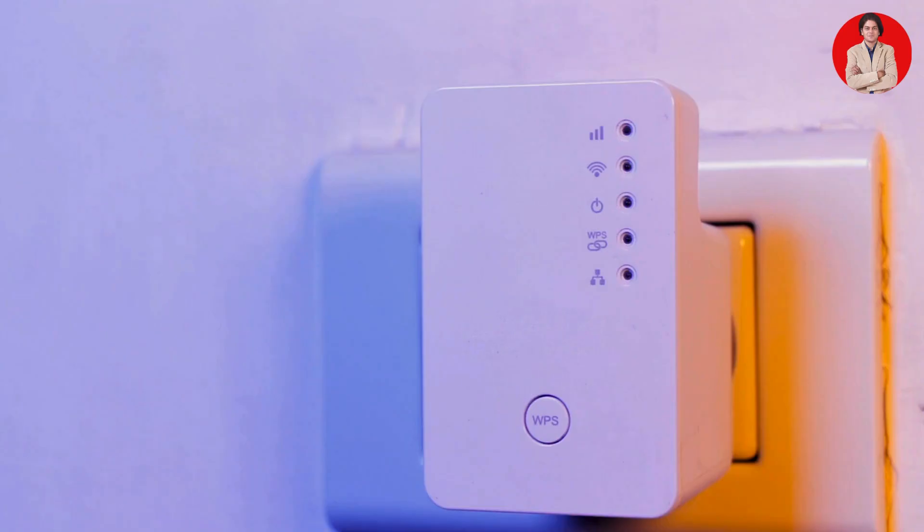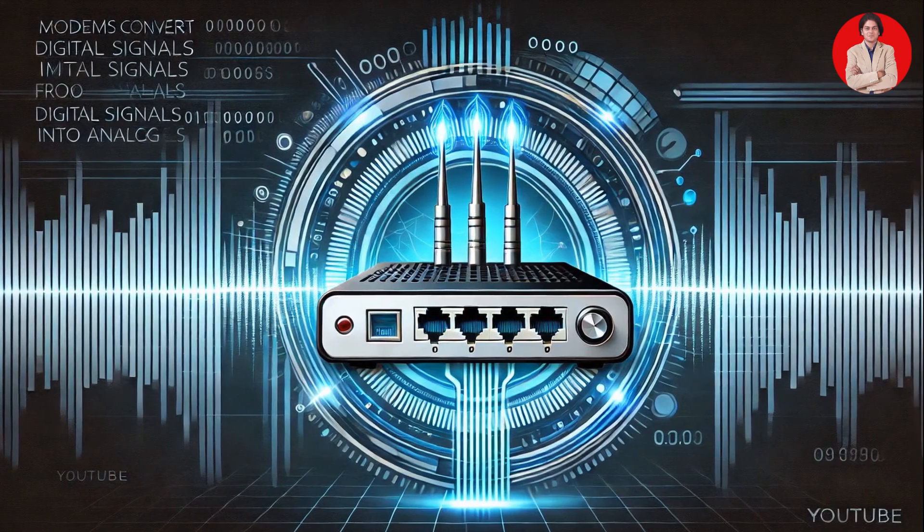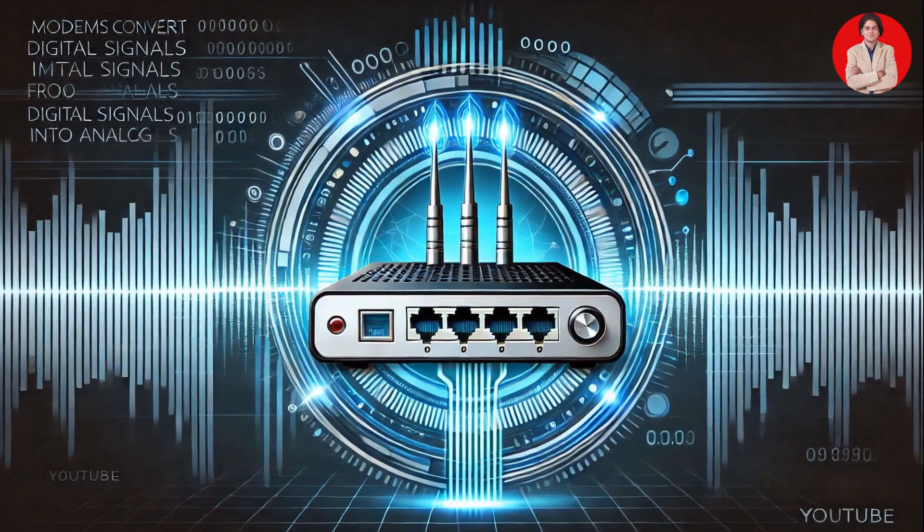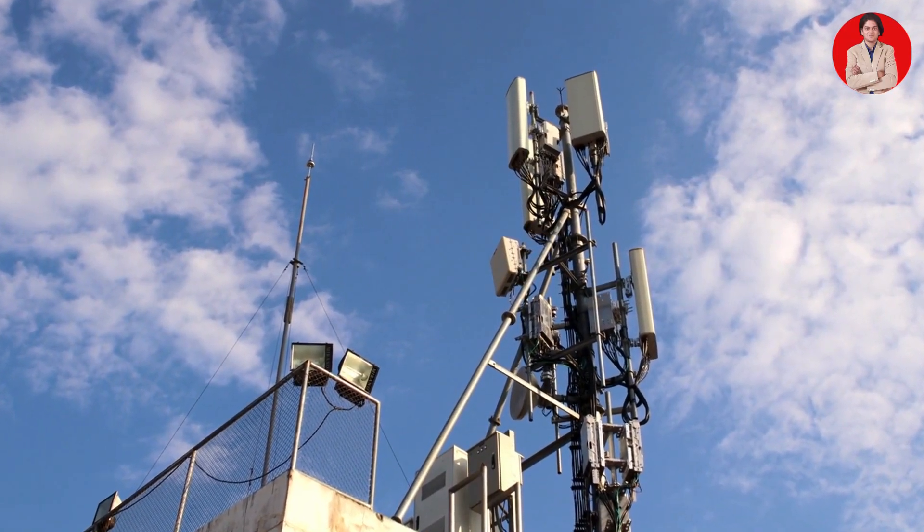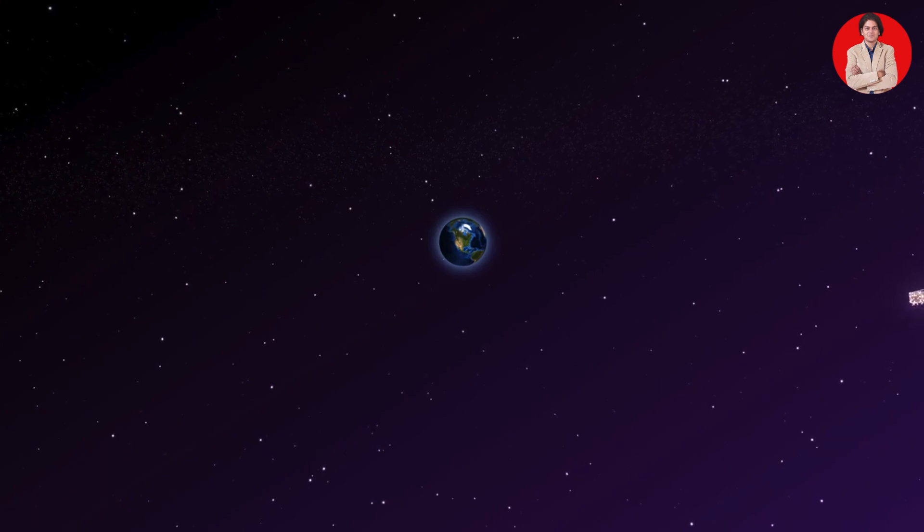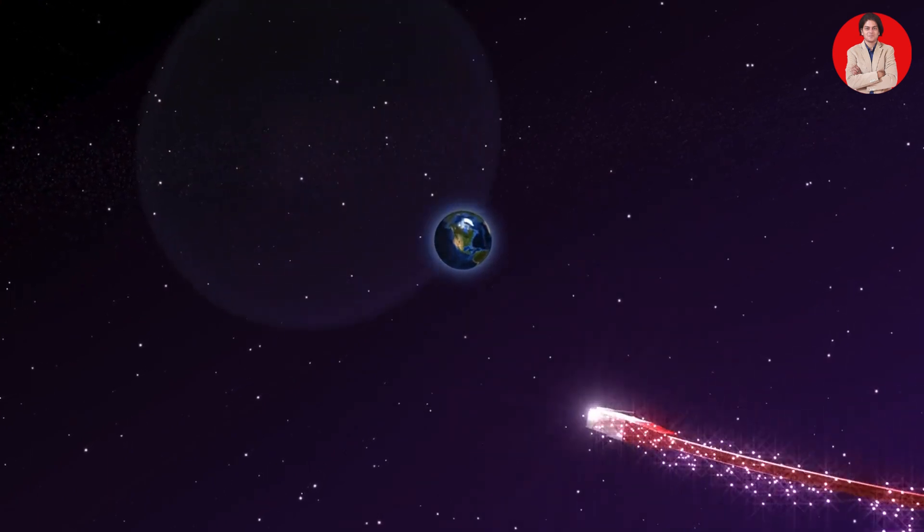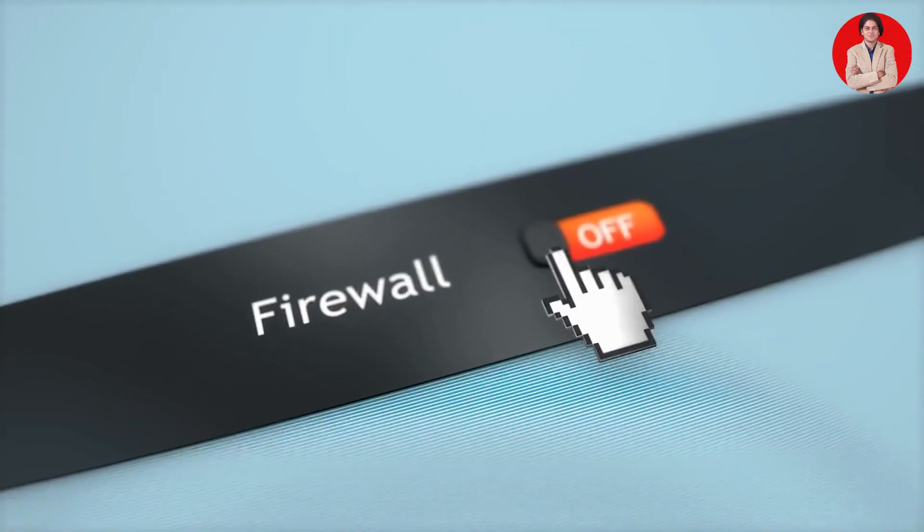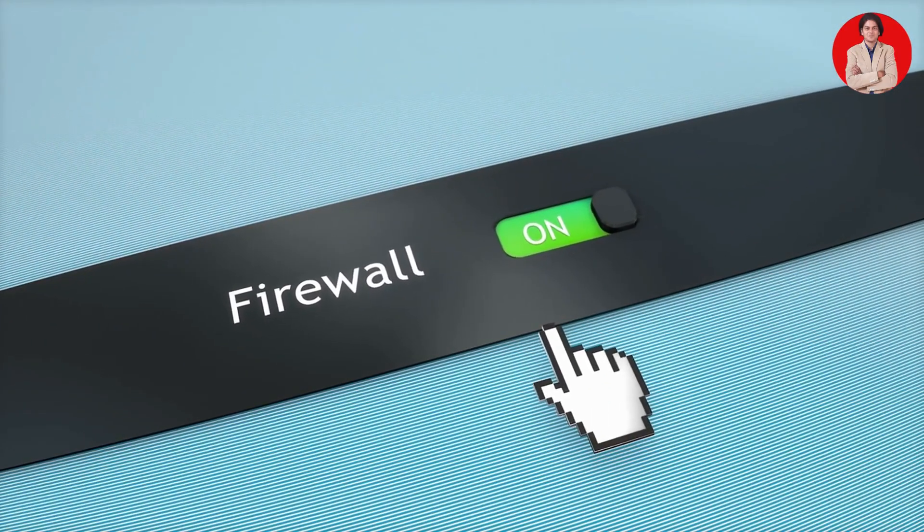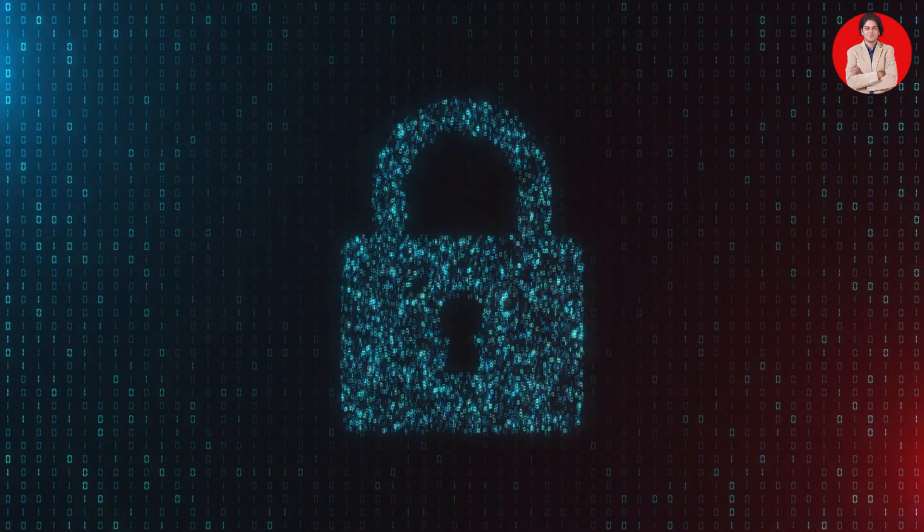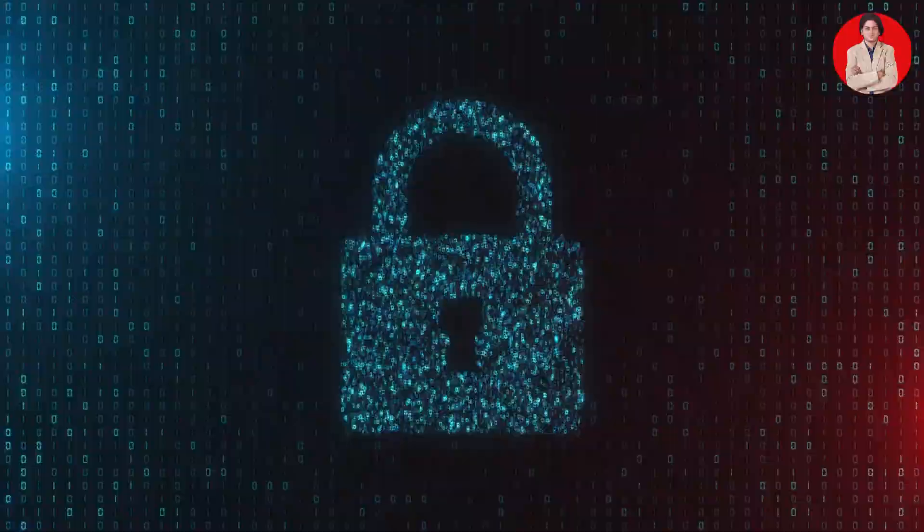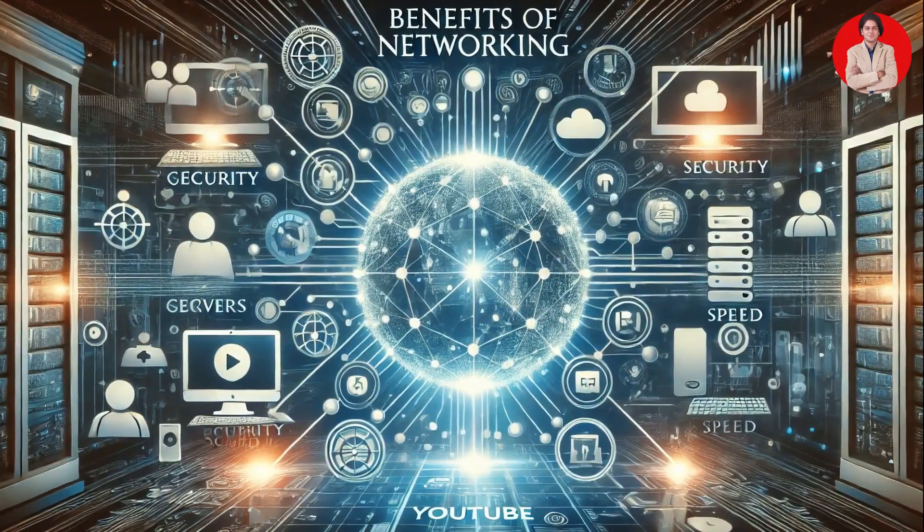Modems: Devices that modulate and demodulate signals for internet access. Modems convert digital signals from computers into analog signals that can be transmitted over telephone lines or cable networks and vice versa. Firewalls: Security devices that control network traffic, blocking unauthorized access and protecting the network from malicious attacks.